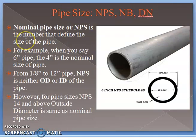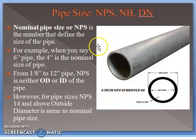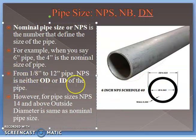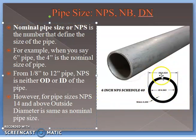NPS — Nominal Pipe Size — is a number that defines the size of a pipe. For example, consider a six-inch pipe with NPS 6 and Schedule 40. In the NPS system, from 1/8 inch to 12 inch, NPS is neither the OD nor the ID of the pipe. For a 6-inch NPS pipe, the NPS is 6, whereas the outside diameter is 6.625 inches and the inside diameter is 6.065 inches.